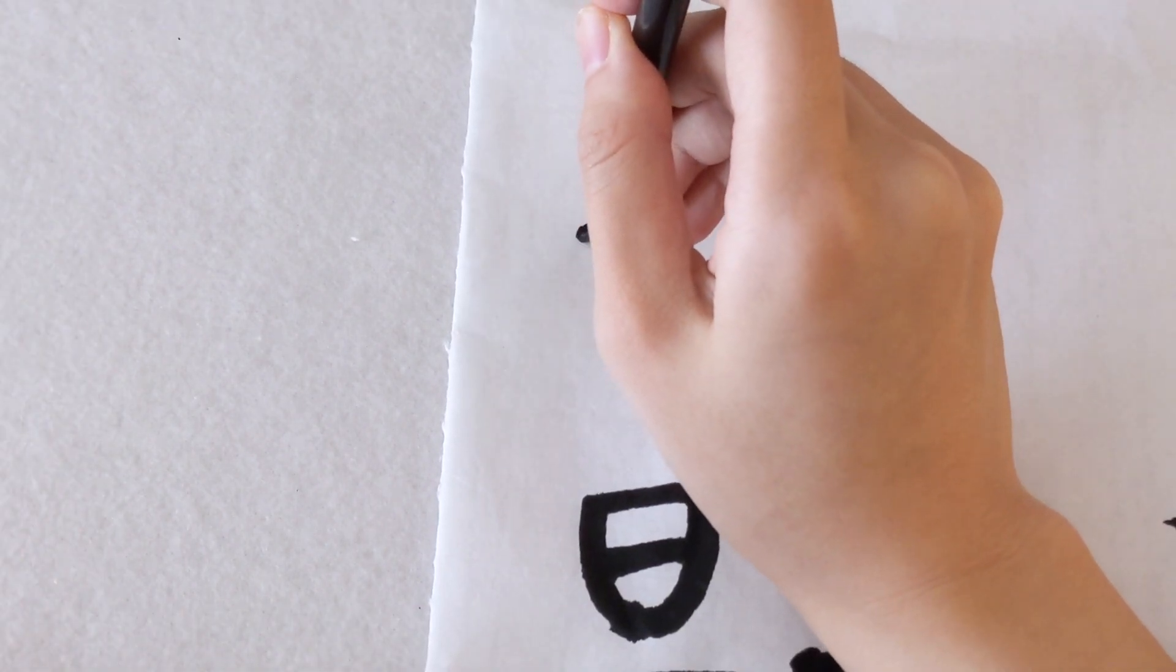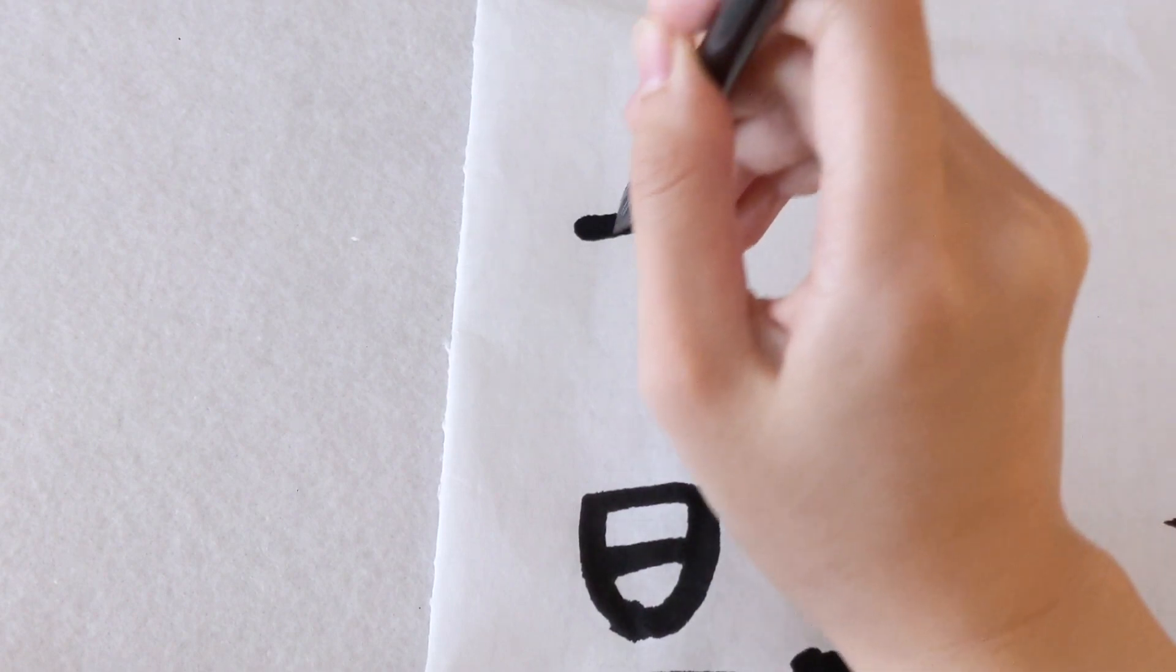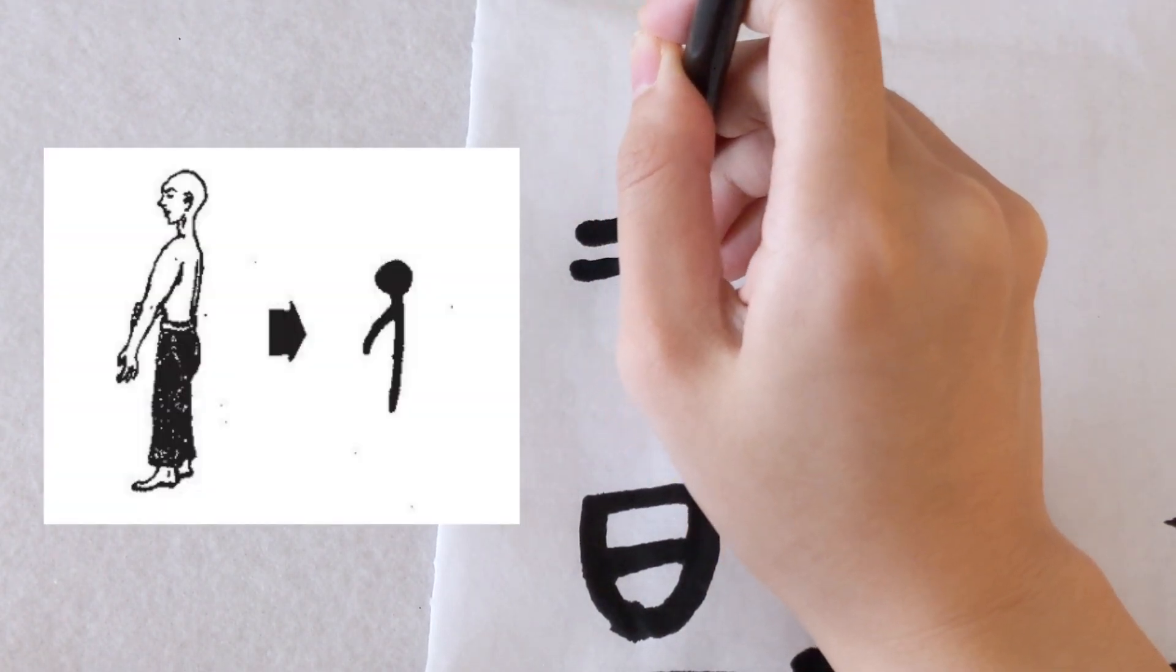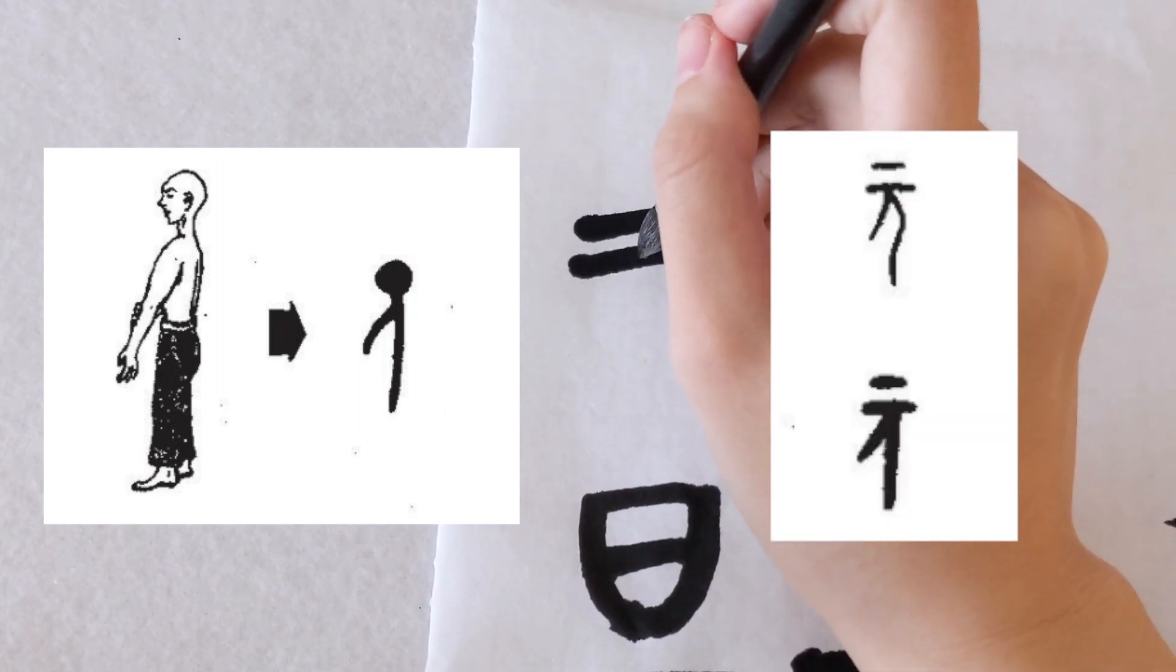Okay, let's move on to the other character, which is much harder to guess. Let me give you some hints. Originally, it's the people standing there with a big head, then in oracle bone script, the head is flattened out and denoted by a horizontal stroke.